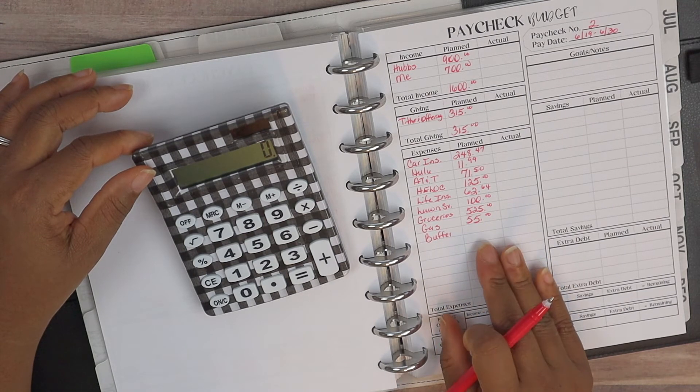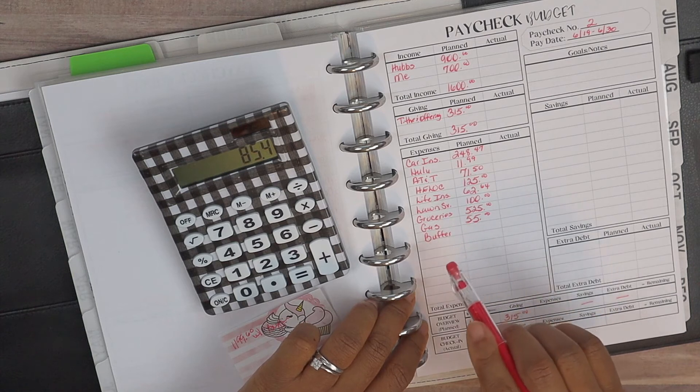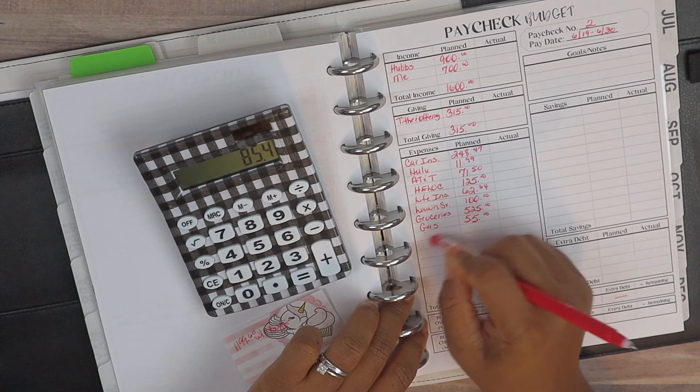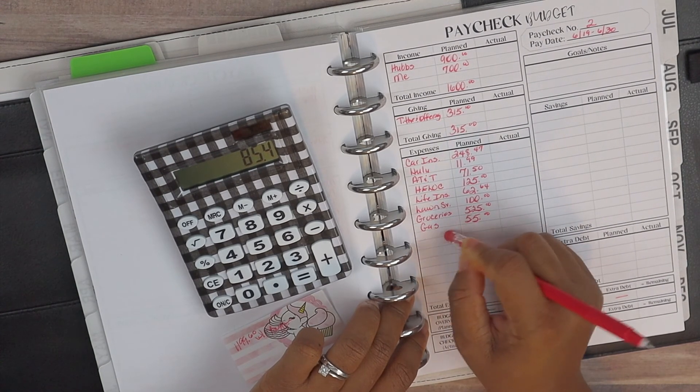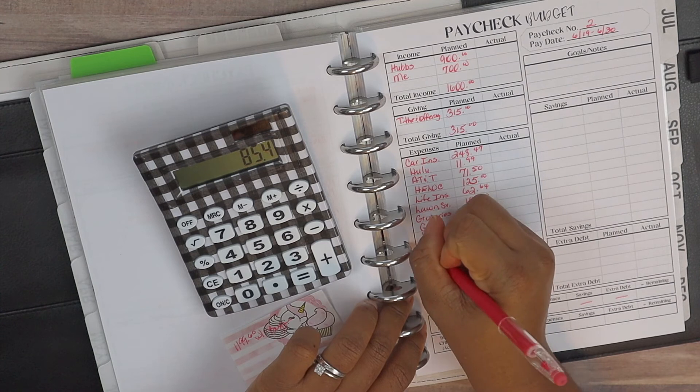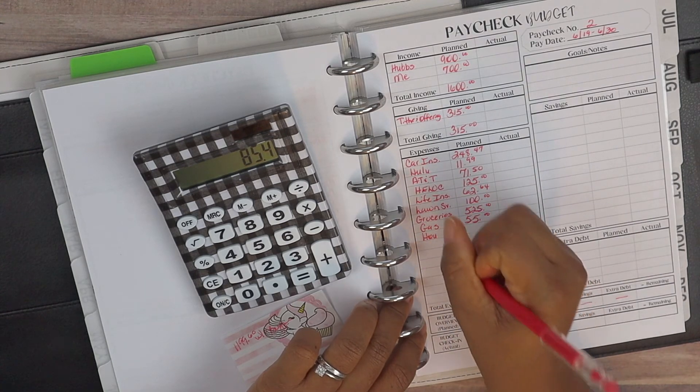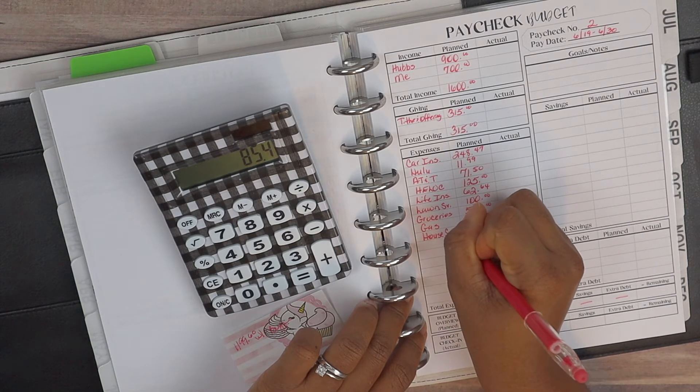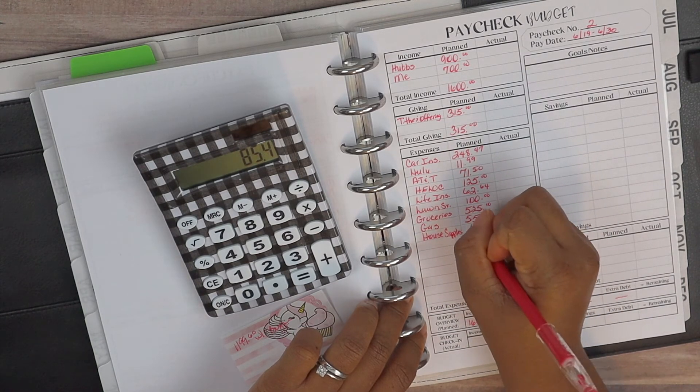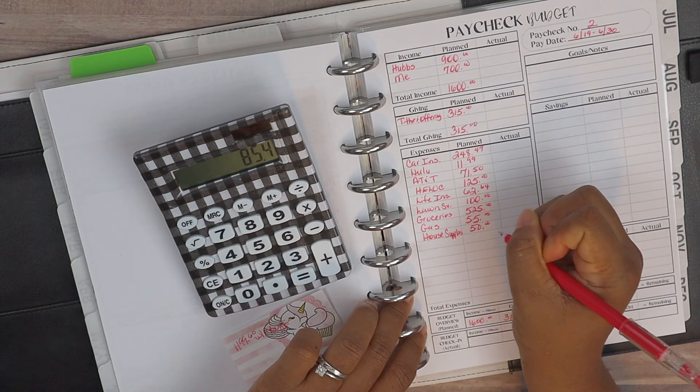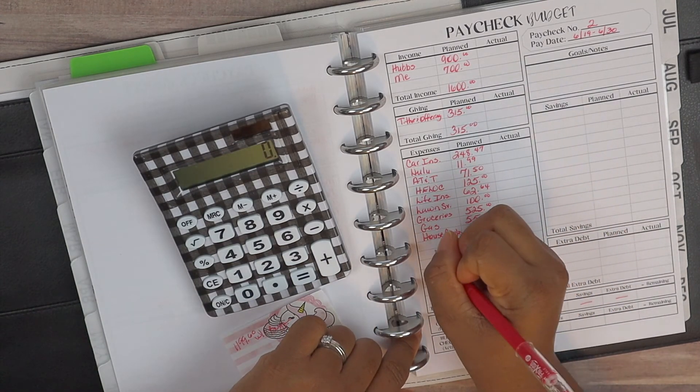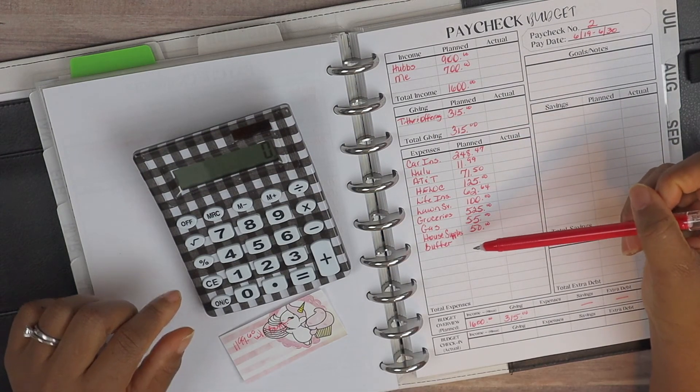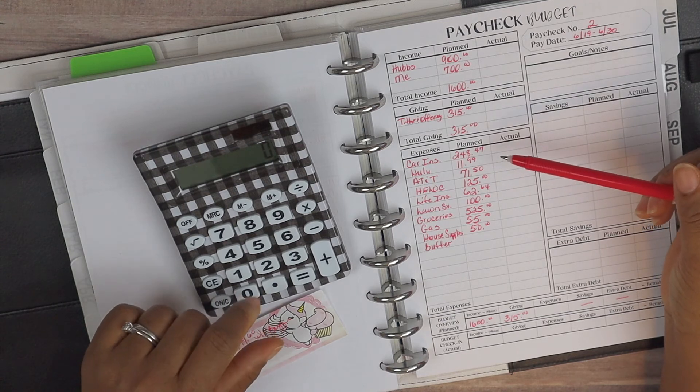And guys, I left off the house supplies, so let me erase this and just go ahead and make sure that I add house supplies. I know that looks kind of funky there, so thank God for an erasable pen. So house supplies, we were supposed to make sure that we account for $50 in house supplies and then the buffer. I've got to recalculate this because I left off the house supplies guys, so let me recalculate this real quick.